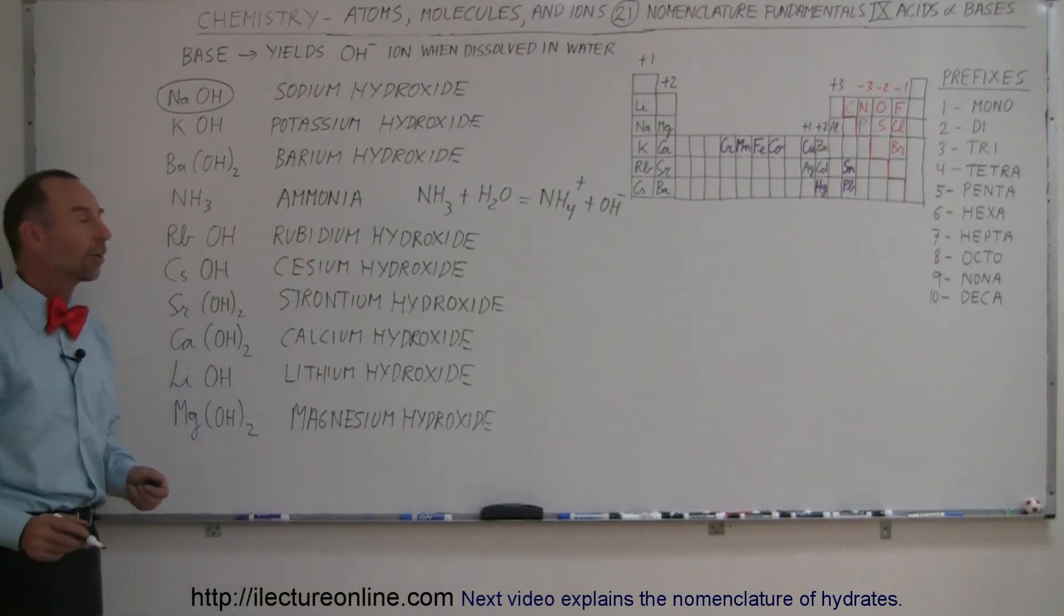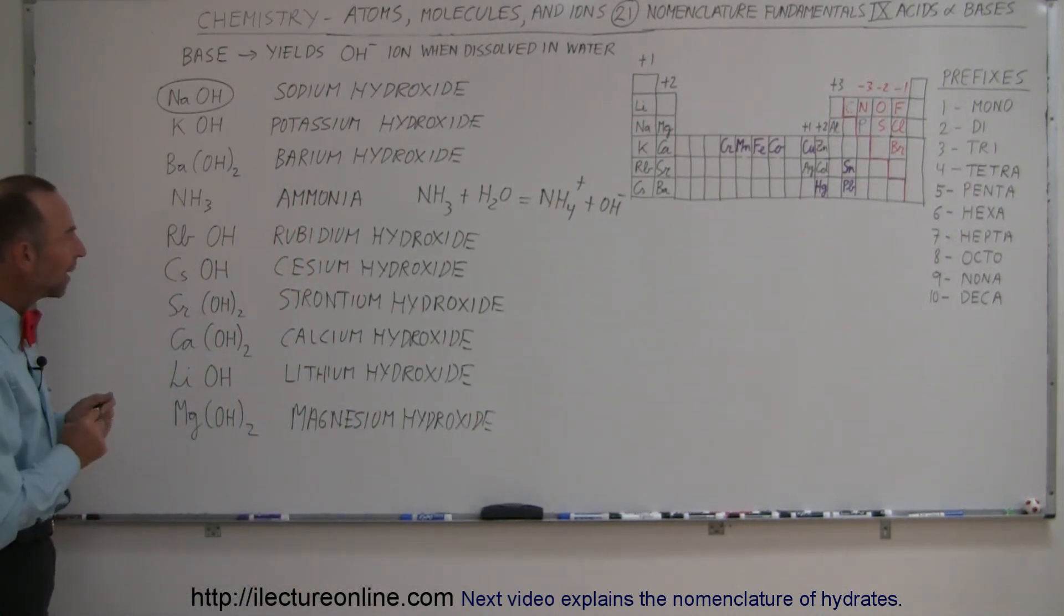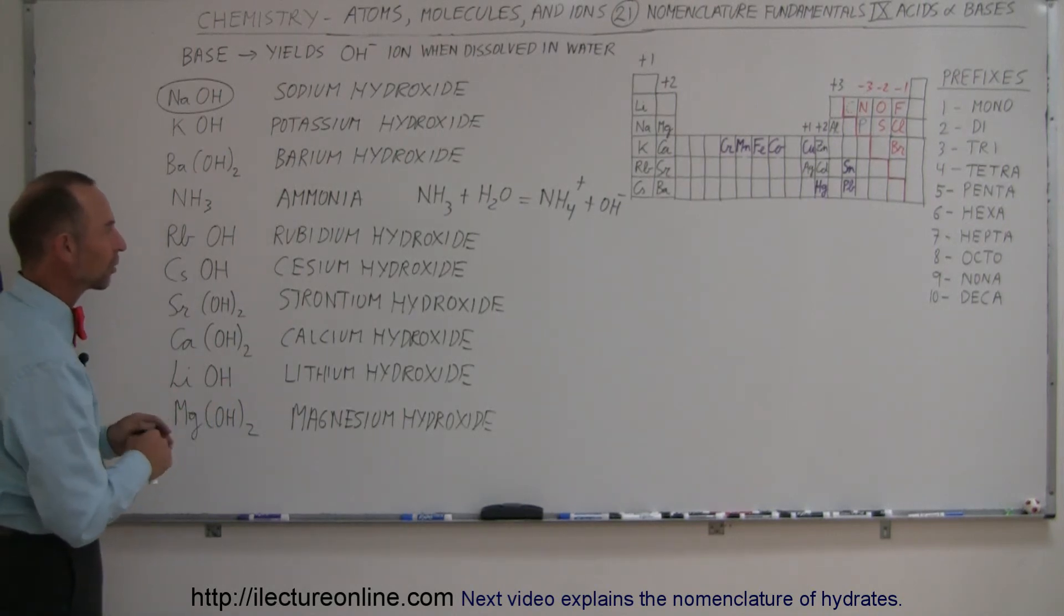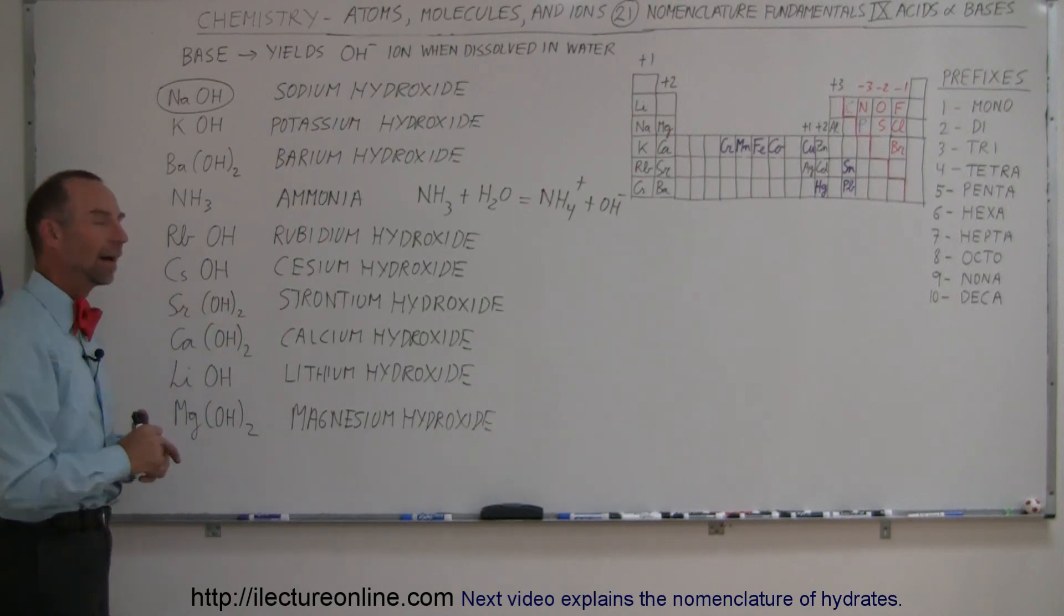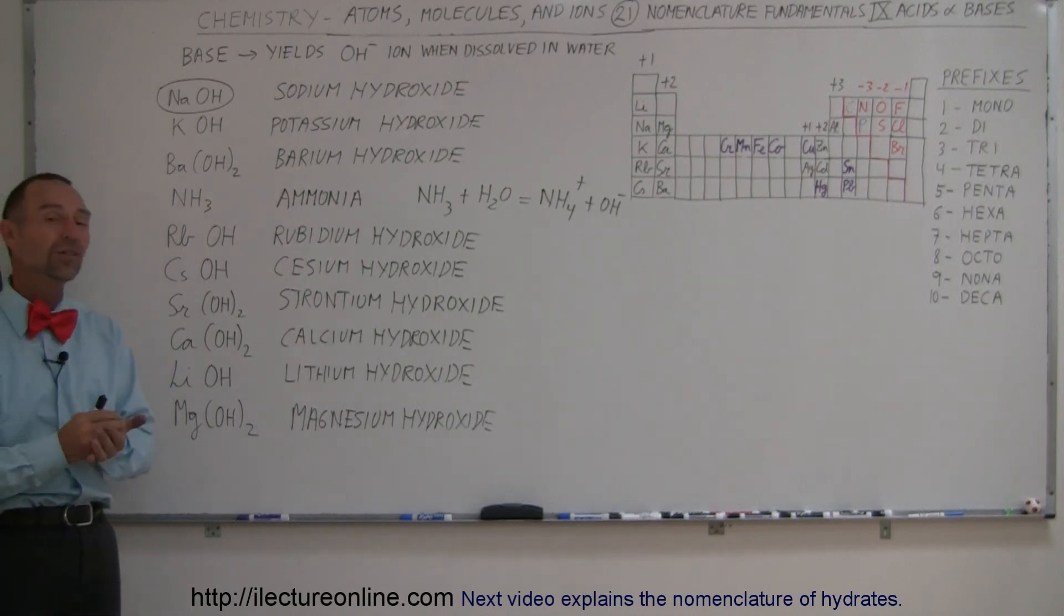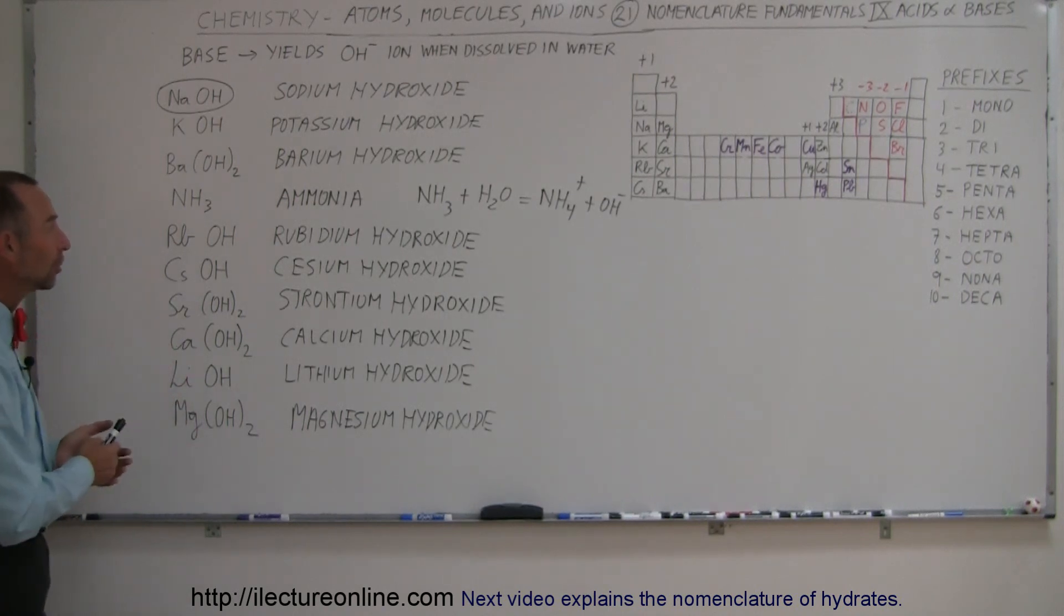That gives you a nice start on some of the more common bases that are around. Of course, there's many more that form different kinds of molecules and compounds that are also bases that produce OH ions in the water, but that's for another video. At least I want to give you some basic idea of what a base was and some of the common bases that produce hydroxide ions when dissolved in water.